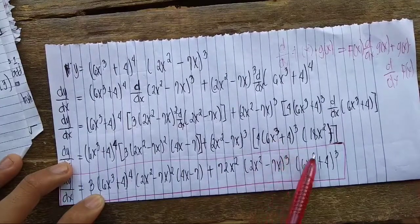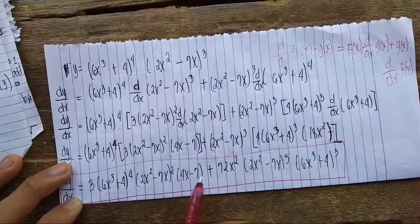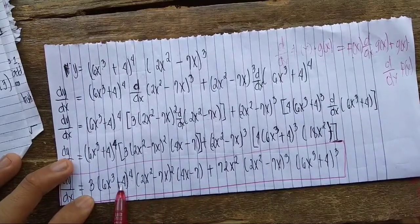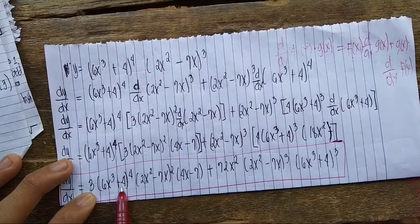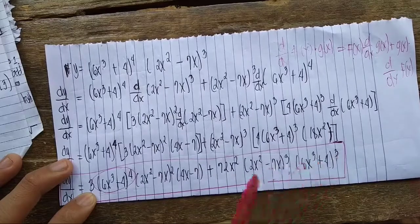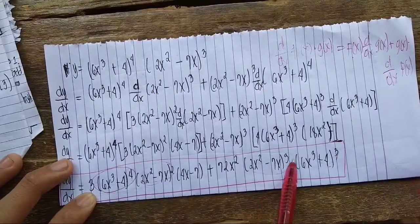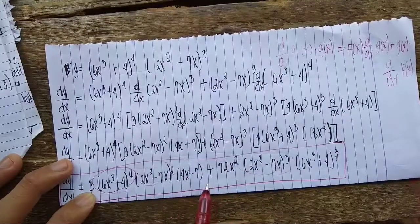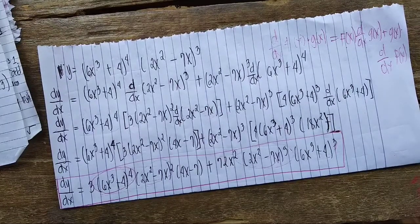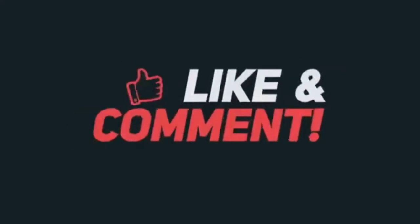So the final answer is 3(6x³+4)⁴(2x³-7x)²(4x-7) + 72x²(2x³-7x)³(6x³+4)³. You can simplify further — for instance, (6x³+4) appears in both terms and (2x³-7x) also appears in both — but we will stop here to avoid making it too complicated. Feel free to explore the simplification. I hope you learned something in this quick tutorial. Please subscribe to our channel, hit the notification bell to stay updated, and thank you — goodbye!